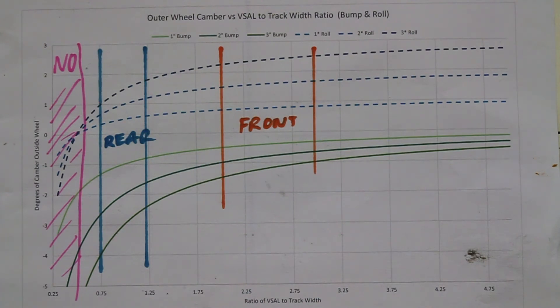So what does that mean? That means in the front, I like to run longer VSALs because I have caster that I can use to introduce camber. In the rear, I don't have caster, so I'll run shorter VSALs, usually from 0.75 to 1.25.